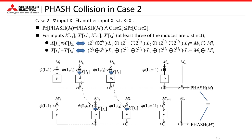Next, I explain the analysis of the PHASH collision in Case 2. In Case 2, any input x collides with another input x', so all outputs of the underlying permutation in the PHASH operation do not affect the collision probability. Therefore, the PHASH collision probability is upper bounded by the probability that Case 2 occurs.